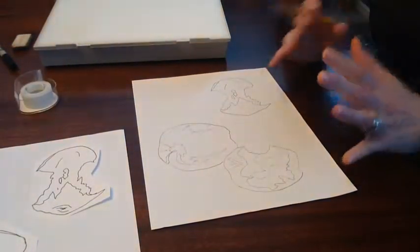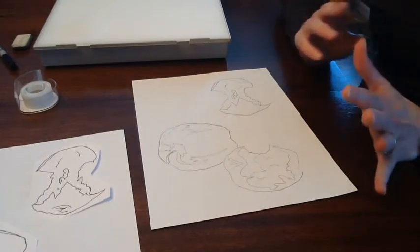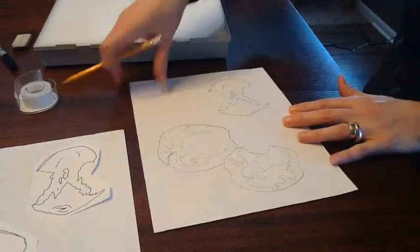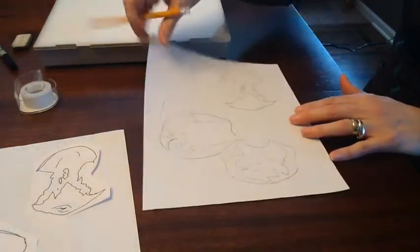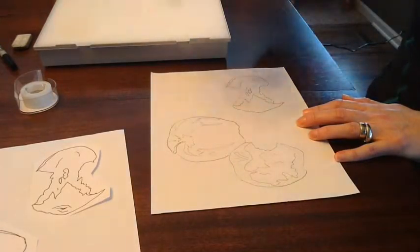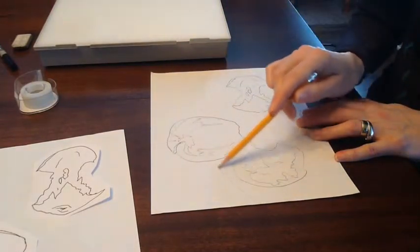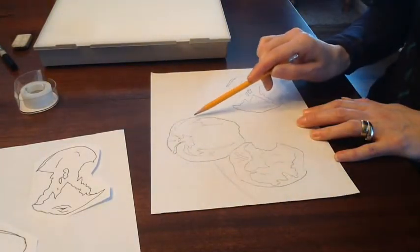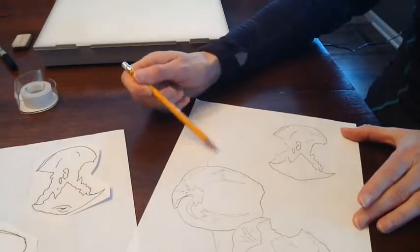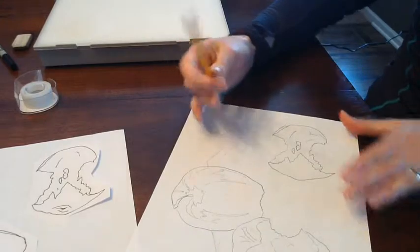All right, the last thing I'm going to do is give my apples kind of an environment to be in, so a table to sit on, so they don't look like they're just floating in space. You could put a straight line, you know, or you could give it a curved line so it looks like it's sitting on a rounded table. Or maybe put the edge like that.